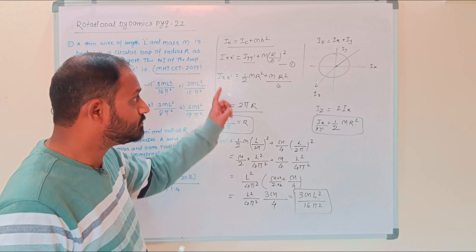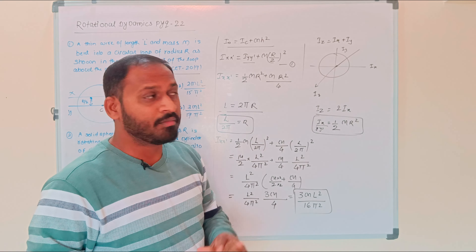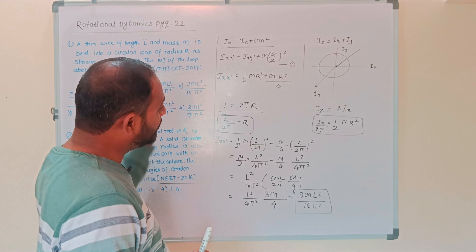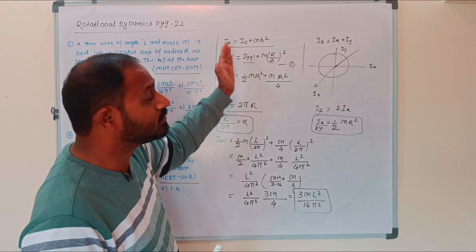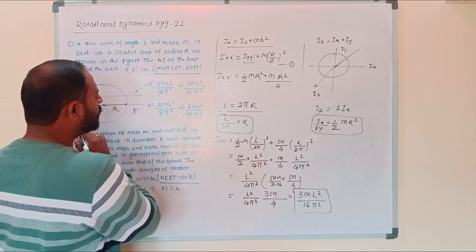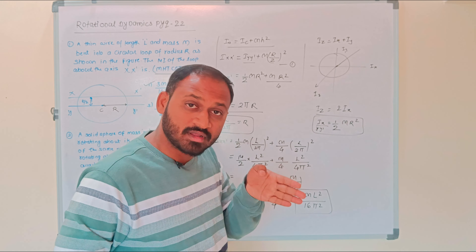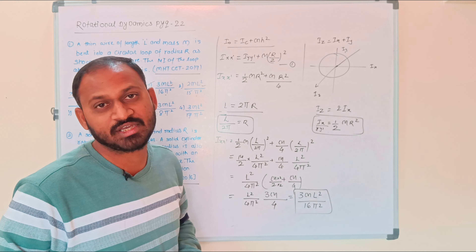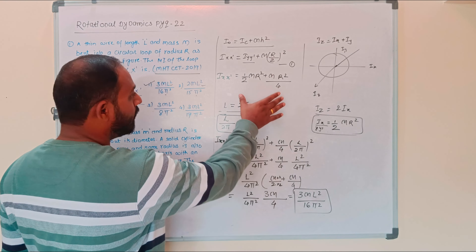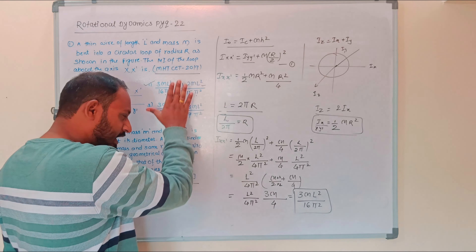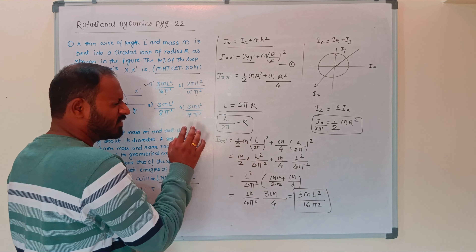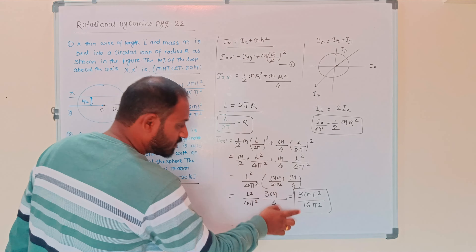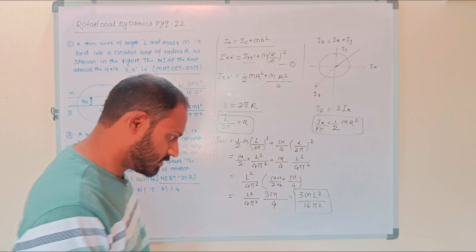To solve this question, first you need to know the parallel axis theorem, then while finding the moment of inertia of the ring about an axis passing through the center but lying in the plane, you have to use the perpendicular axis theorem. After getting the moment of inertia values, change R in terms of L to match the given options.